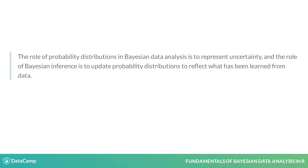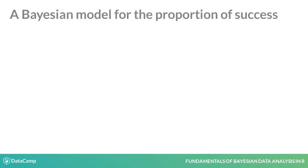All this sounds a bit abstract, so let's try running a simple Bayesian model and actually see how it looks. Let's look at a Bayesian model for an underlying proportion of success. What is success here? Well, it could be curing a patient, getting a click on an ad, getting tails from flipping a coin, etc. It depends on what data you have. And what we're often interested in is what the underlying proportion of success is — like what proportion of patients would get cured by this drug, say.